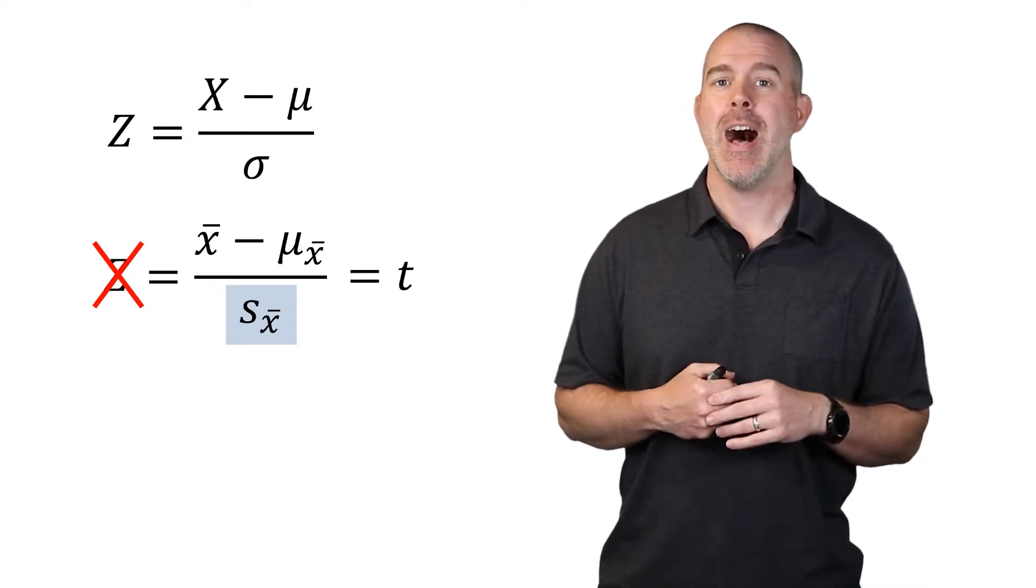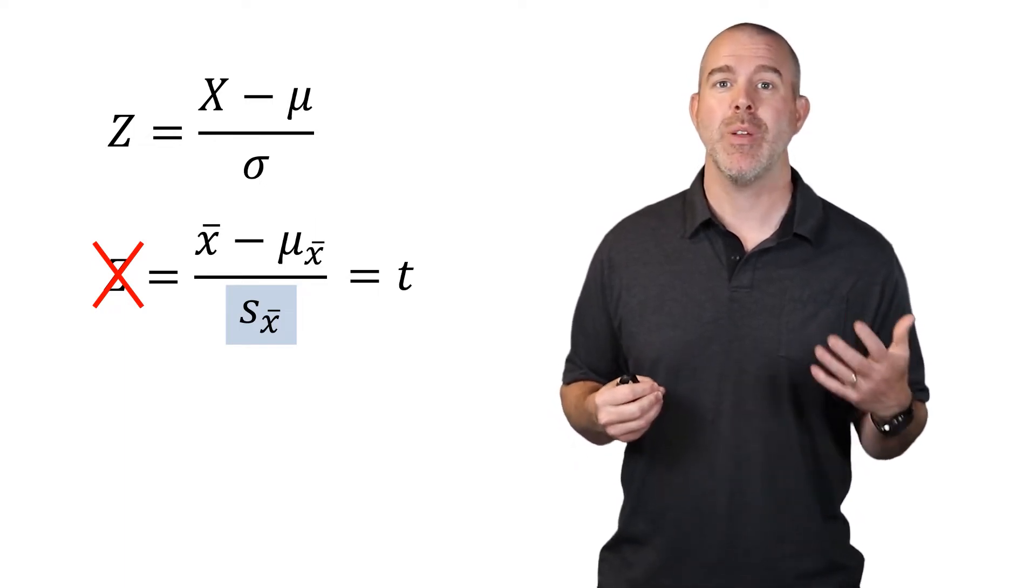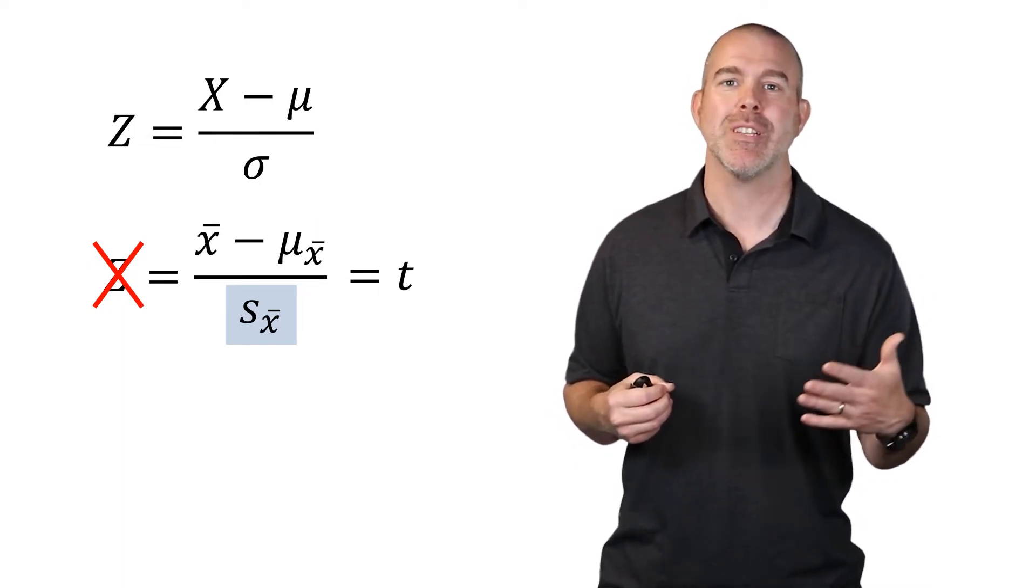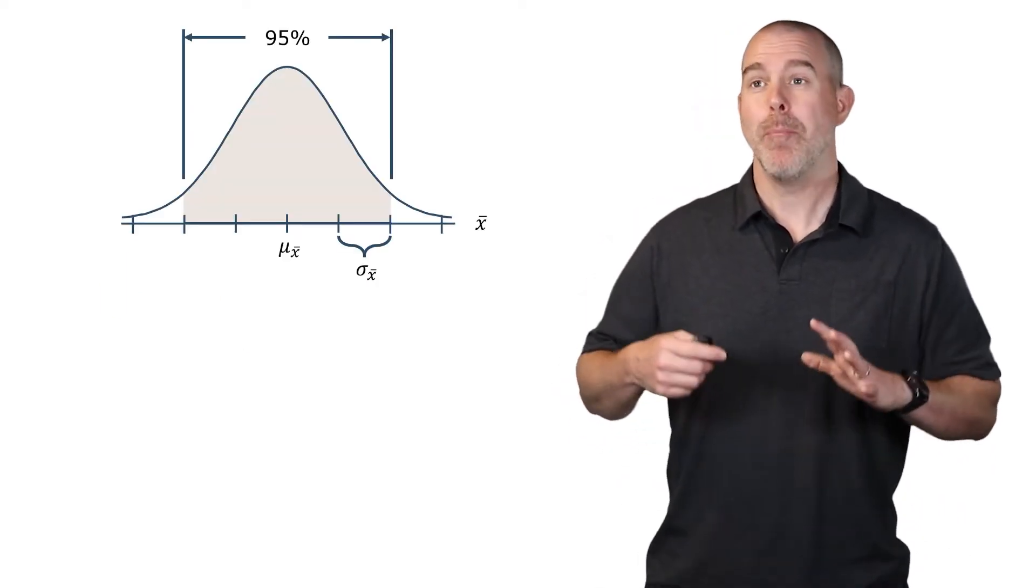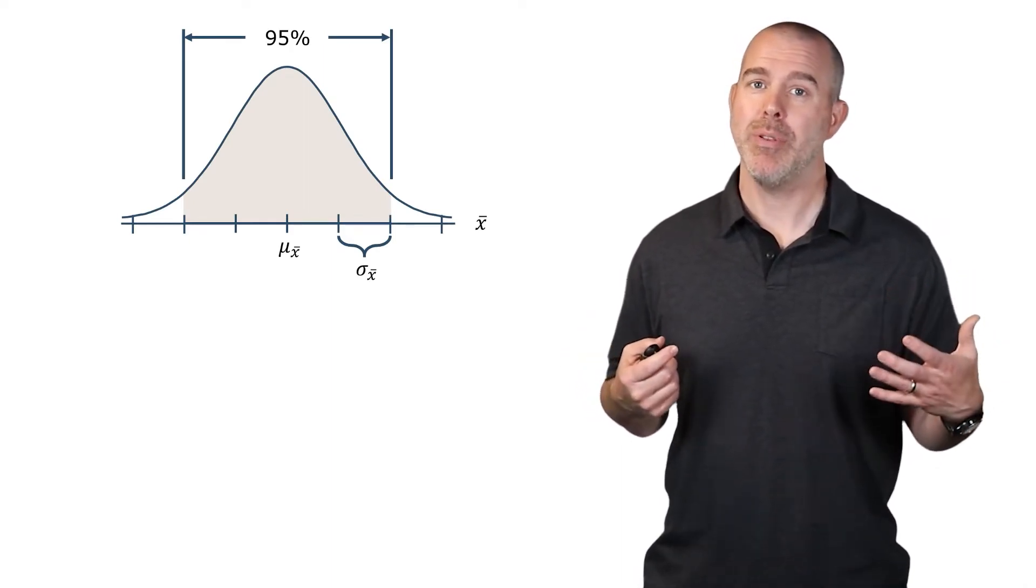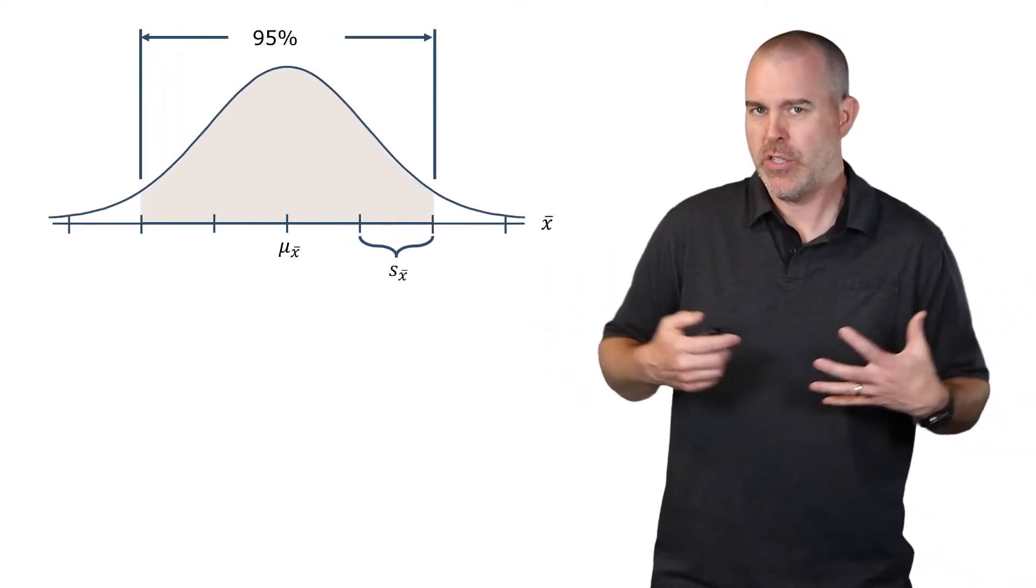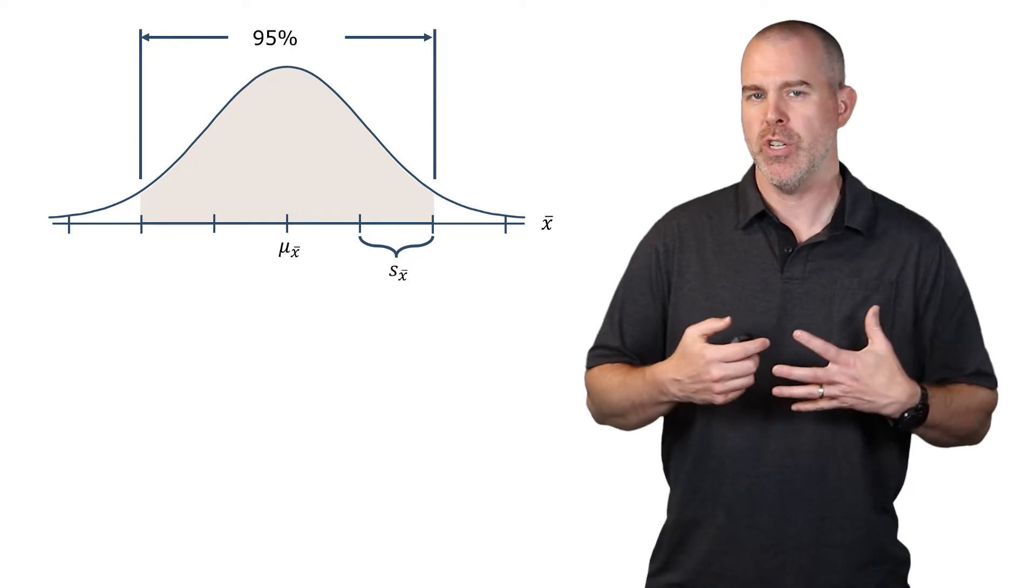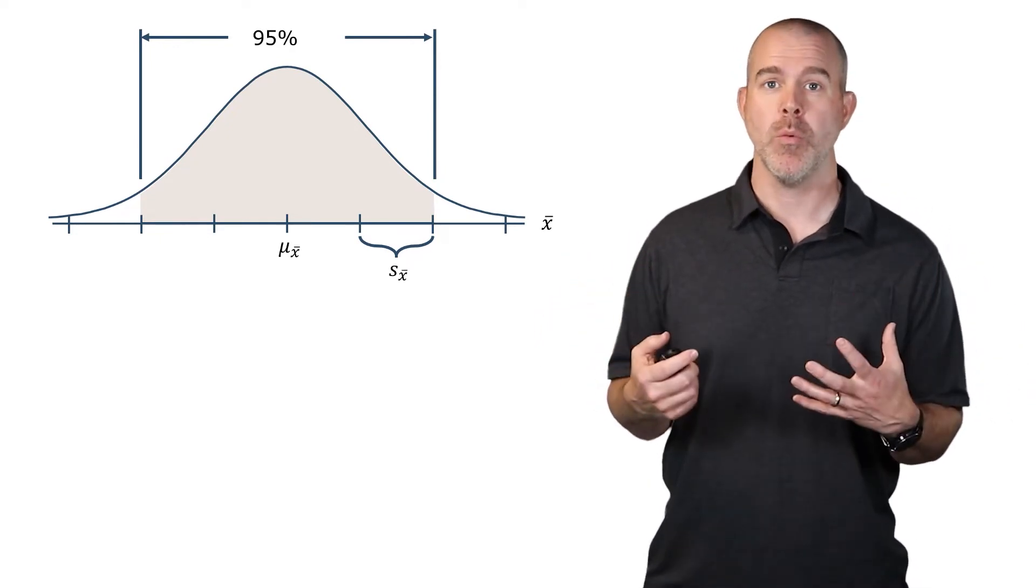There's a cool story about the gentleman who developed this that he had to publish the paper under a pseudonym because the research that he was doing was for his company and he wasn't allowed to publish under his company name. I believe the name is William Gossett, Student's t distribution. Now, because we're using the sample standard deviation there in place of the population standard deviation, then there's more uncertainty. This distribution, Student's t distribution is spread out a little bit wider than the regular normal distribution.